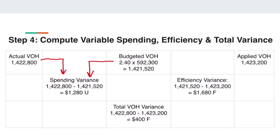To find efficiency variance, subtract budgeted by applied variable overhead. This gives $1,680F. Since it is negative, it is favorable and we place an F beside it. We do not include the negative sign.